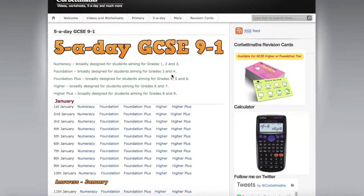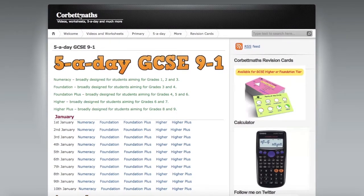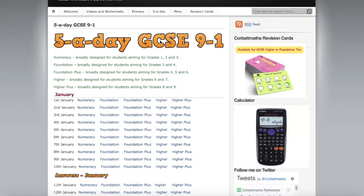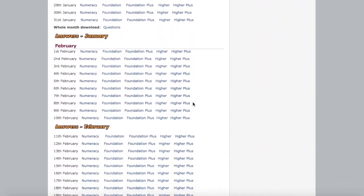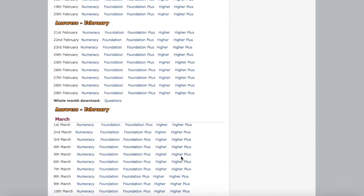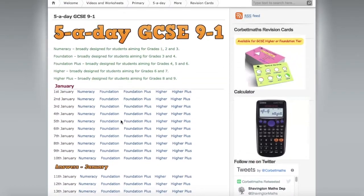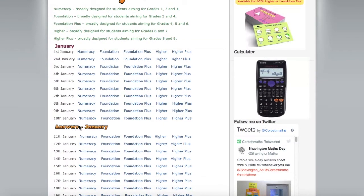So you can go to this page—it's called 5-a-day at corbettmaths.com—and go down on this page to any of these links and pick a random one and have a go. The answers are also available.